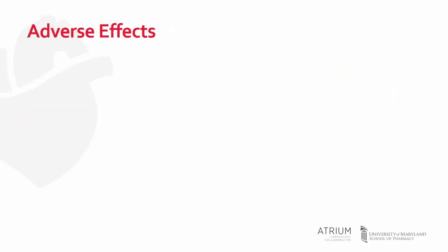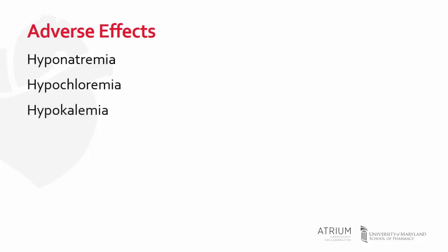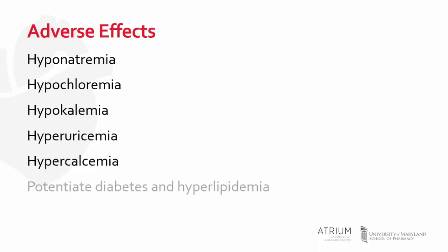As one would expect with thiazide diuretics, electrolyte disturbances can be observed. Hyponatremia, hypochloremia, and hypokalemia are all examples of electrolyte disturbances that can be seen. In addition, uric acid and calcium concentrations can be increased, hence patients with gout should initiate these drugs with caution. Thiazides have also been associated with potentiating diabetes and worsening lipid profiles. Although these effects have been observed, they are inconsistently reported, and it is unlikely that they impact long-term therapy for these comorbidities.